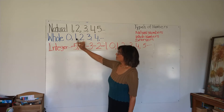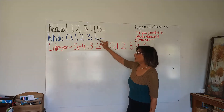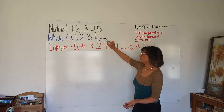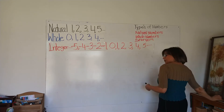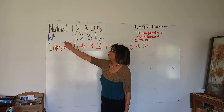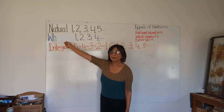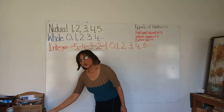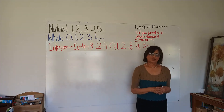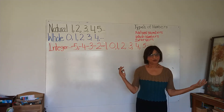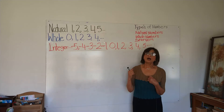I put zero in front of one. Now they are called whole numbers. So let me show you here — if I cover zero, then they are natural numbers. If I uncover zero, now they are whole numbers.